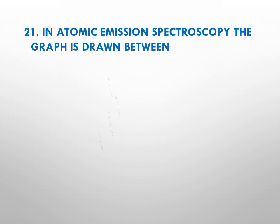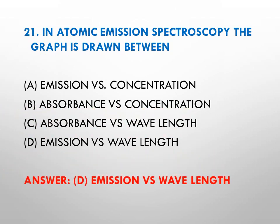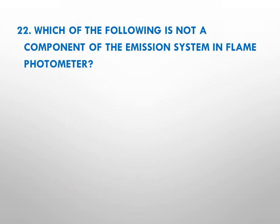Question number twenty-one: in atomic emission spectroscopy, the graph is drawn between — A emission versus concentration, B absorbance versus concentration, C absorbance versus wavelength, D emission versus wavelength. The right answer is D — the graph is plotted between emission versus wavelength.